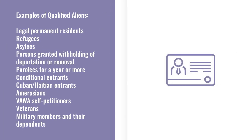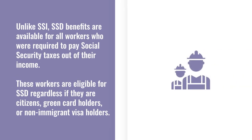Some examples of qualified aliens are legal permanent residents, refugees, asylees, persons granted withholding of deportation or removal, parolees for a year or more, conditional entrants, Cuban-Haitian entrants, Amer-Asians, VAWA self-petitioners, veterans, and members of the military and their dependents.